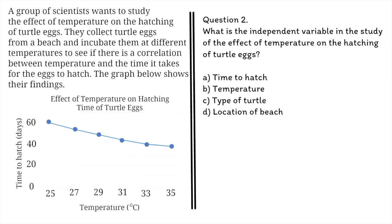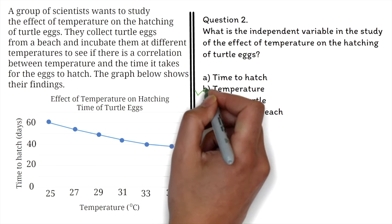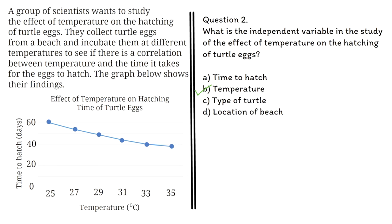Question 2: What is the independent variable in the study of the effect of temperature on the hatching of turtle eggs? A. Time to hatch, B. Temperature, C. Type of turtle, D. Location of beach. The correct answer is B. Temperature. To be good in this section of the GED, you must be able to identify the dependent and independent variables.